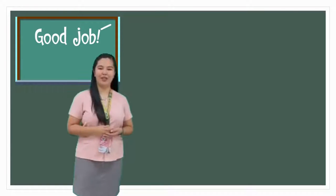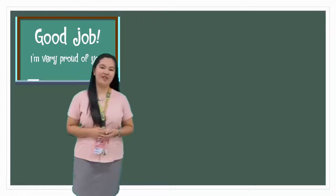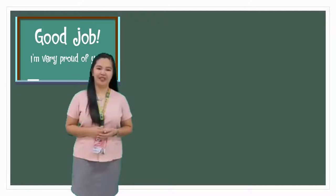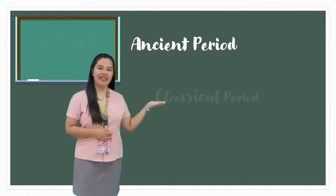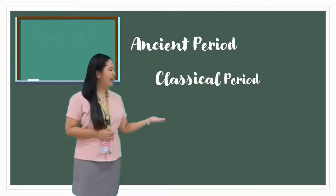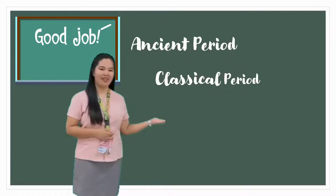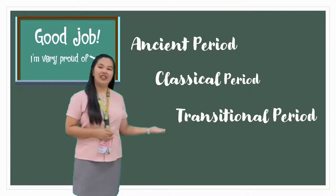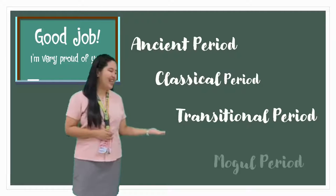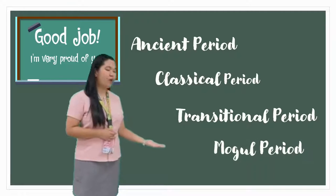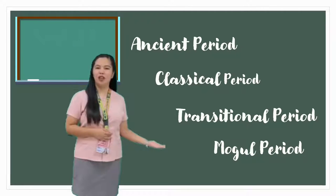So those are the periods of Indian art. Let us recap: first is the ancient period; second, the classical period; third, the transitional period, also known as Islamic Ascendancy; and last, we have the Mughal period.